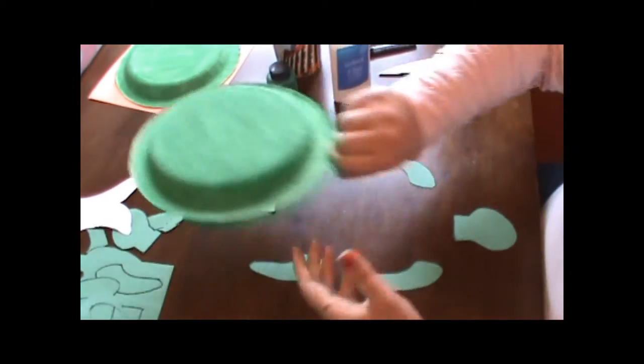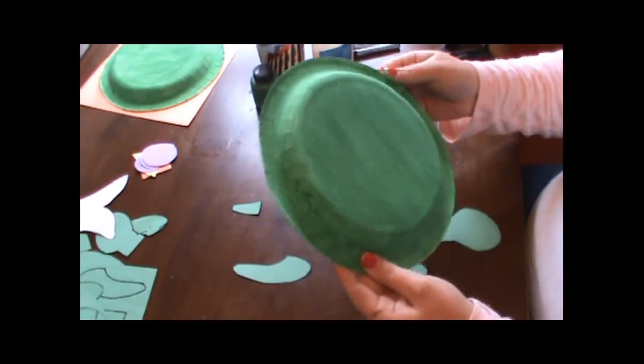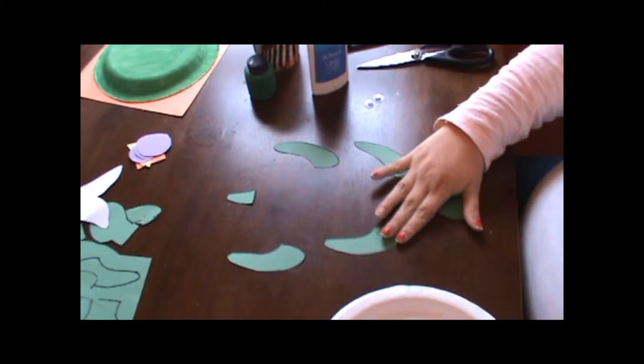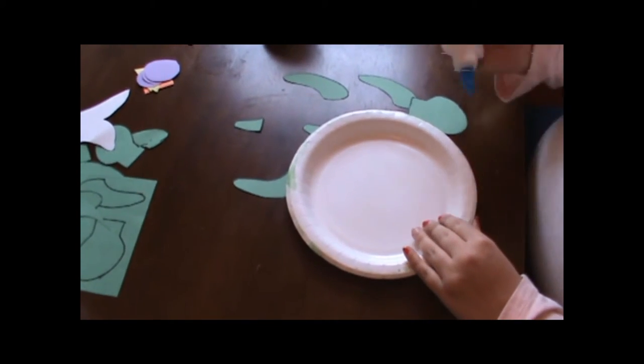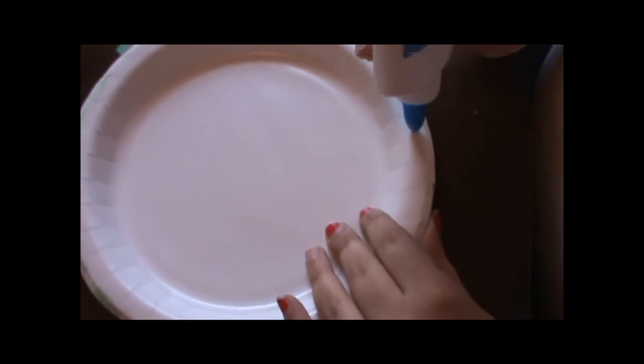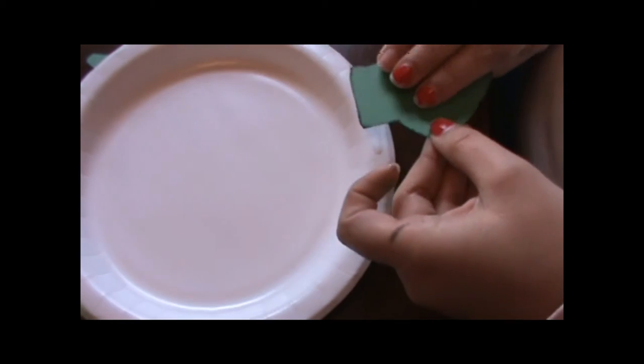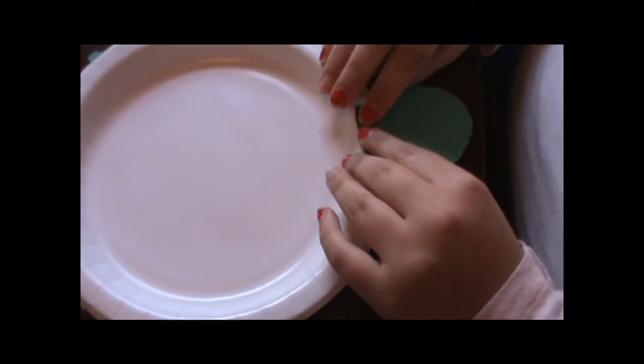You need to make sure your paper plate is dry and then you need to flip it on the back. Put a little bit of glue on the top and flip the head over so that is going to be showing when you flip it back over and glue it on.